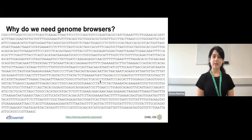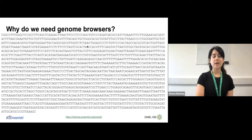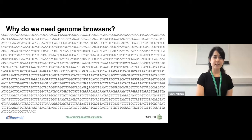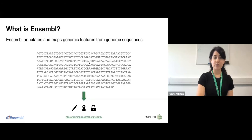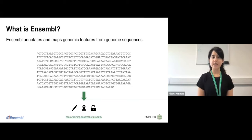So why do we need genome browsers? Genomes are big and contain a lot of data. If you were to look at the raw sequencing data, it can look like just a string of letters of genetic code — it doesn't really make any sense. In order to make sense of this data, we need to annotate it, and this is what genome browsers do. Ensembl is a type of genome browser that annotates and maps genomic features from genome sequences.